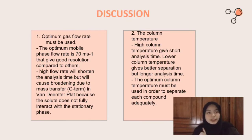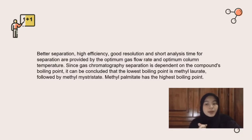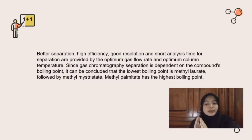High column temperature gives short analysis time but some early peaks may overlap, while low column temperature produces better separation but takes very long analysis time. The optimum column temperature must be used to separate each compound adequately. 210°C is the best column temperature to separate each of the compounds. For better separation, high efficiency, good resolution, and short analysis time are provided by the optimum gas flow rate and optimum column temperature. Since GC separation is dependent on boiling point, the lowest boiling point is methyl laurate, followed by methyl myristate, and methyl palmitate has the highest boiling point.